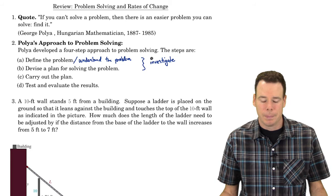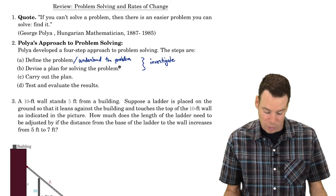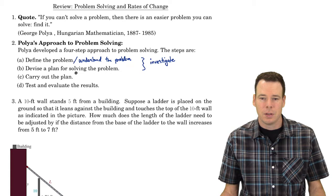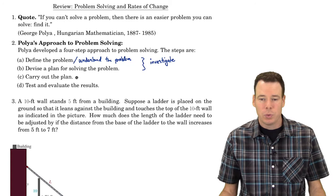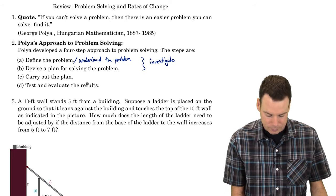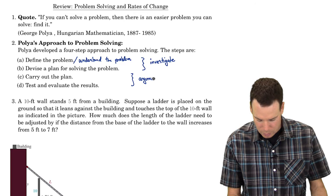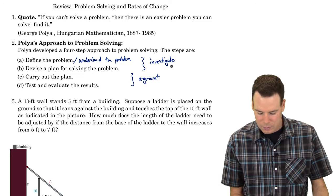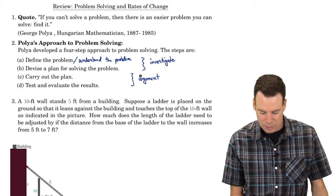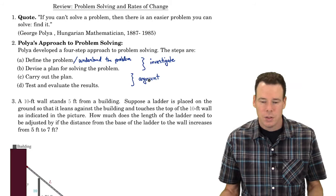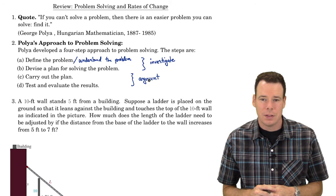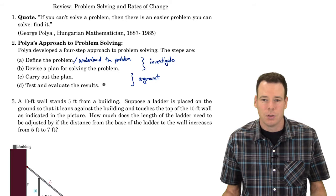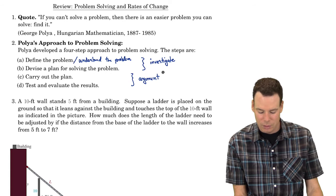Once we've got a plan for solving the problem, we go ahead and carry out that plan. This is where the bulk of the work tends to happen — all the little details and calculations. Once we've carried out our plan, we go ahead and test and evaluate our results. This is the argument phase: you work through all the details and if you're trying to convince someone that your answer is correct, you appeal to the plan you carried out and your evaluation of results. That's why I refer to this as your argument phase.